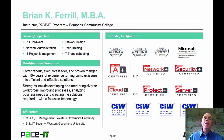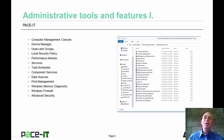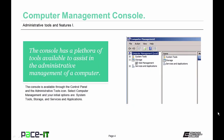I'm Brian Farrell, and welcome to PACE IT's session on administrative features and tools, part one. Today we're going to discuss quite a few administrative tools and features. We begin with the computer management console — it has many useful features and is used to assist in the administrative function of a computer. It's available through the Control Panel and the Administrative Tools icon, then select computer management. Once there, you have access to system tools, storage tools, and service and application tools.